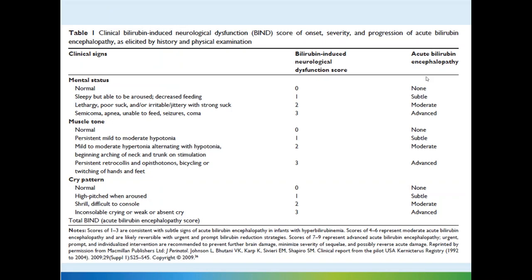A scoring system for bilirubin-induced brain injury categorizes babies into mental status, muscle tone, and cry pattern, scored 0 to 3 each. Normal mental status is 0; sleepy but arousable is 1; lethargic with poor suck is 2. For muscle tone: normal is 0, hypotonia is 1-2, persistent retrocollis and opisthotonus is 3. Cry: normal is 0, high-pitched when aroused is 1, shrill and inconsolable is 2, comatose with absent cry is 3. Scores 1-3 indicate subtle signs; 4-6 moderate injury; 7-9 advanced bilirubin injury requiring emergency exchange transfusion.